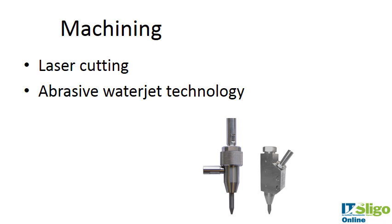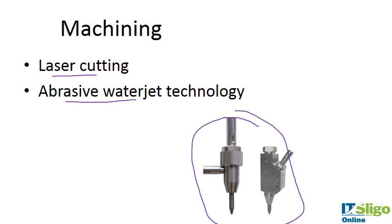As mentioned, ceramics are very difficult to machine. However, laser cutting and abrasive water jet technology are used. Ultra short-wave laser cutting generates enough heat to cut through the ceramic, and there's an example of a water jet nozzle shown here. I'll refer you back to previous slides on this subject.